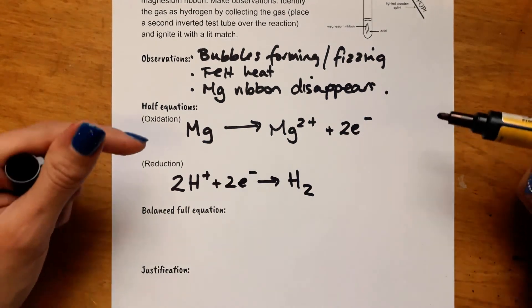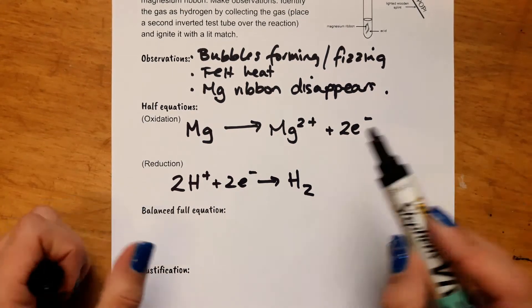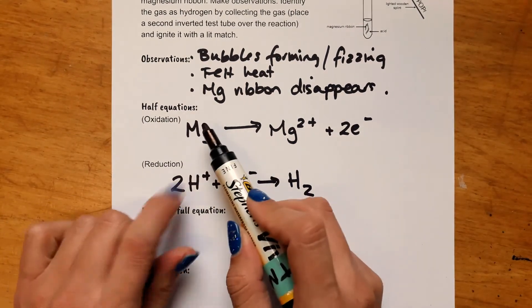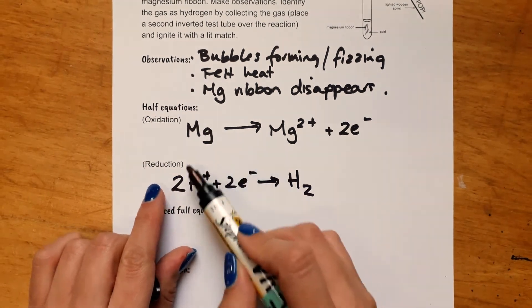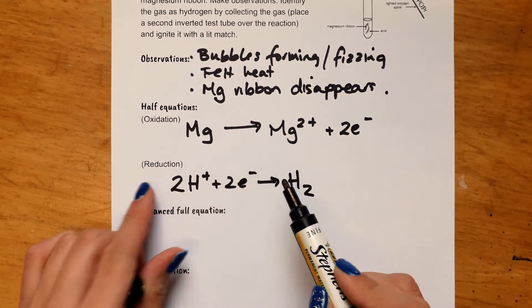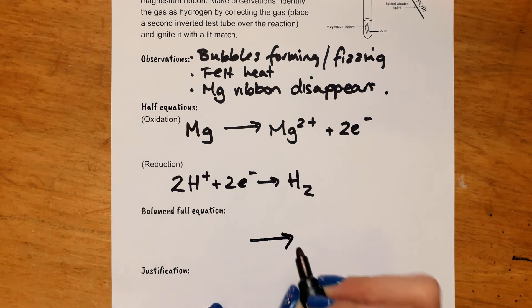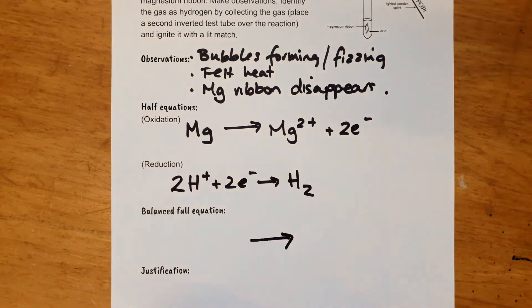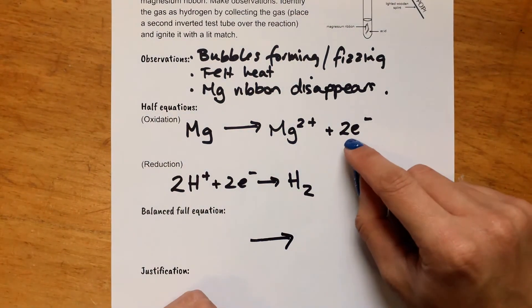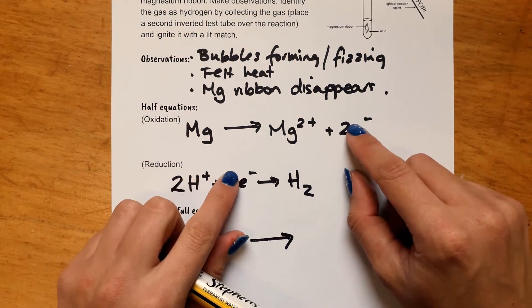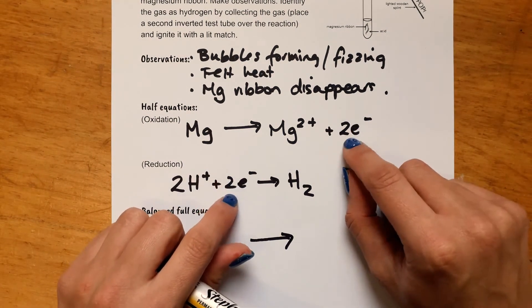To write the balanced full equation, we need to say this is what we started with. So we're going to put all of this together. Then we're going to have an arrow, right? And then all of the stuff we're left with, we produce. You'll notice that on both sides of the arrow, we've got two electrons. So they will actually cancel, a bit like if they were on some different sides of an equal sign.